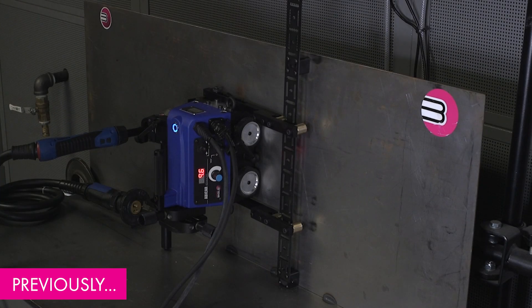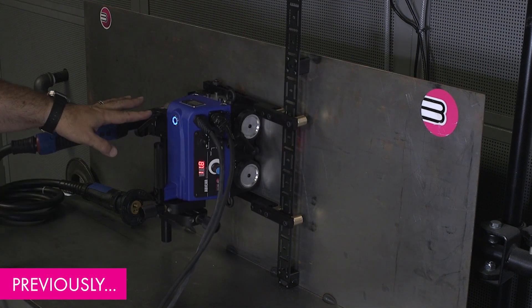That opens us up to a lot of different possibilities with stitch welding, oscillation, and even the extended mass or larger mass of the Abicor Pro to use the dual torch setup.